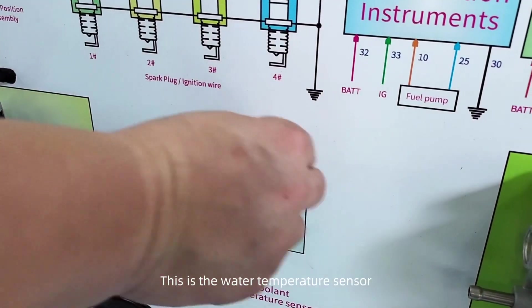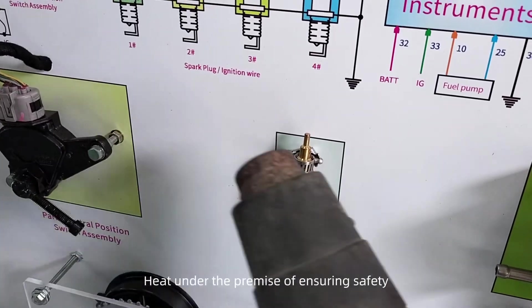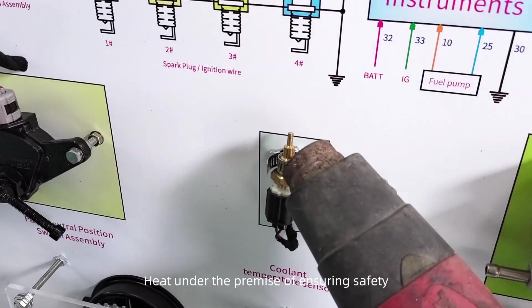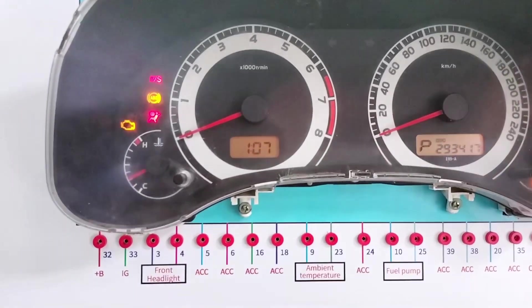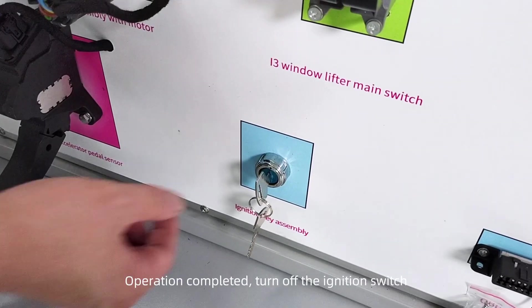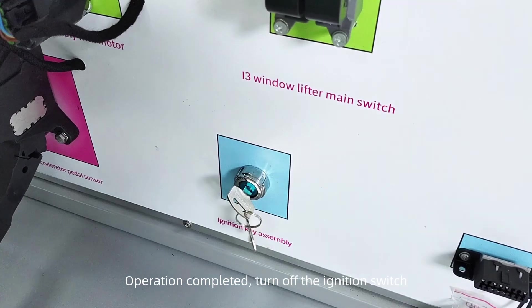This is the water temperature sensor. Heat under the premise of ensuring safety. Dashboard temperature changes. Operation completed. Turn off the ignition switch.